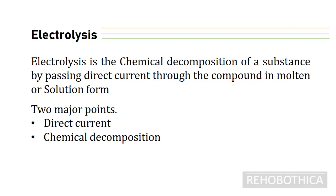Electricity is passed into a solution in the form of direct current — that is, current from a battery. You do this to break down, to decompose, the substances into their components chemically. The compound can be in a molten state, meaning it is heated and melted without any water or solvent, or it can be in solution form, where it is dissolved in water.